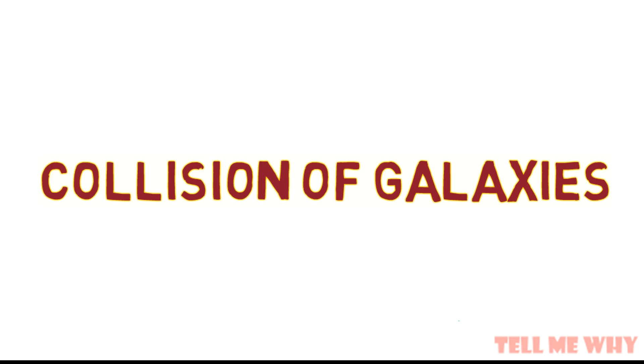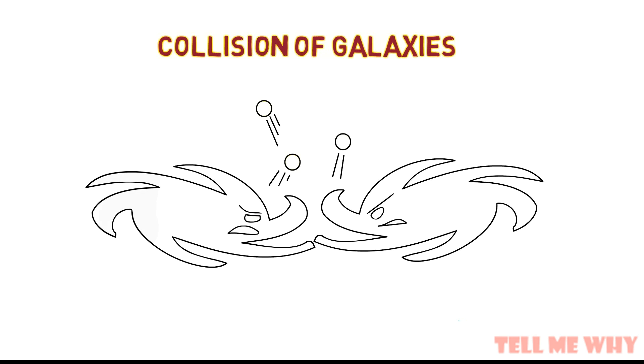Collision of galaxies. This is probably the most common way a star is made rogue. When galaxies collide, they spray out small stars out of their gravitational pull and make them go rogue.